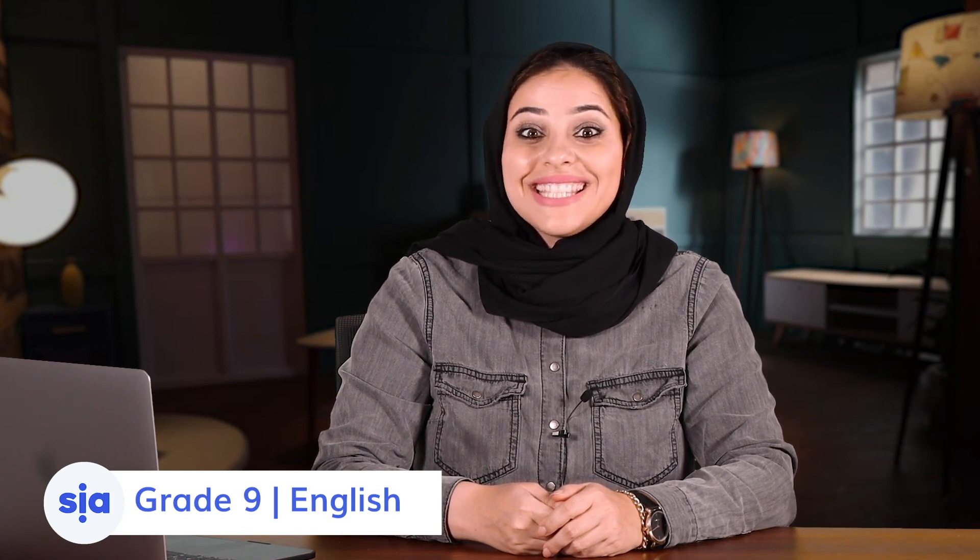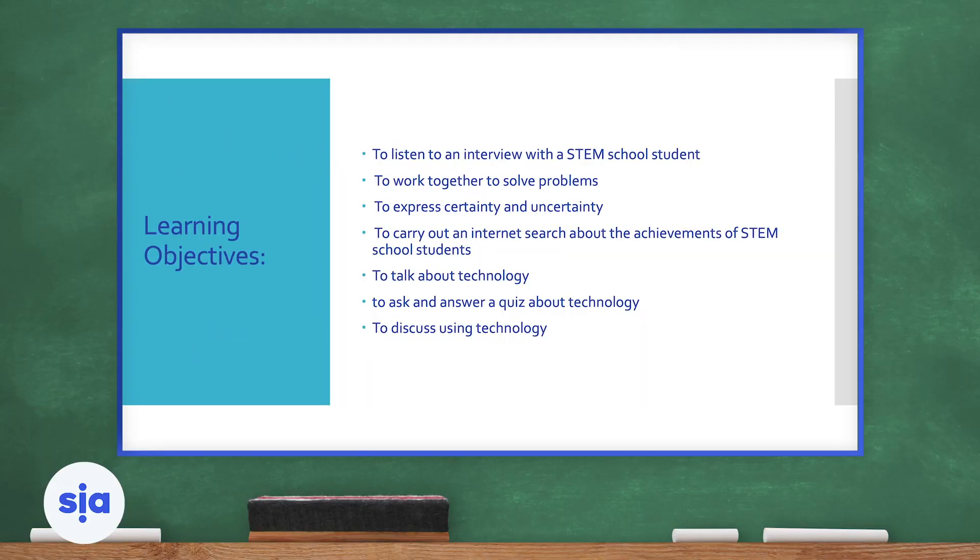Our topic of the day is science and technology. I hope you remember what we discussed last lesson about STEM schools. Let's get started with our objectives of the day. We're going to listen to an interview with a STEM school student. We're going to work together to solve problems. We will express certainty and uncertainty. We're going to carry out an internet search about the achievements of STEM school students. We will talk about technology, ask and answer a quiz about technology, and we will discuss using technology.